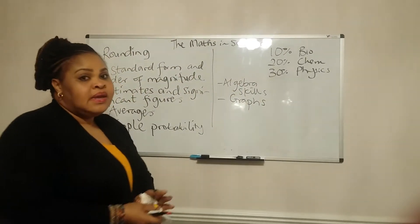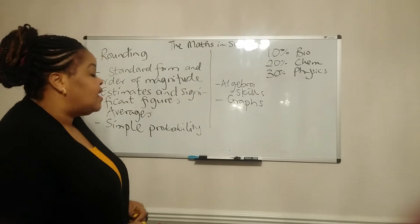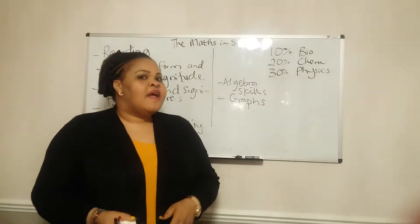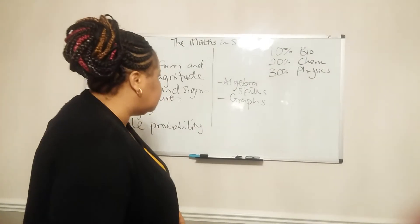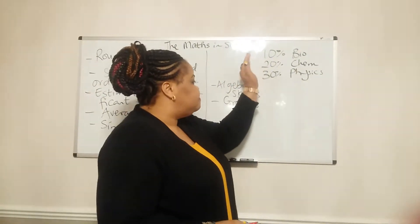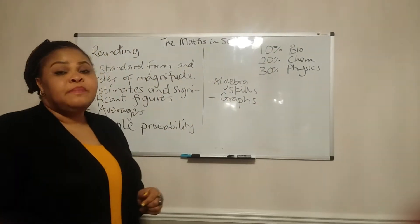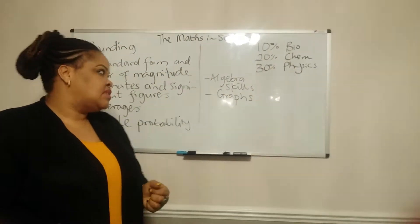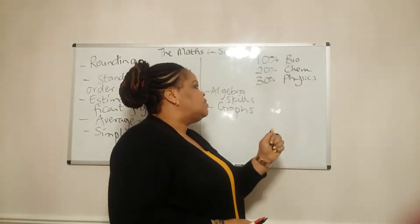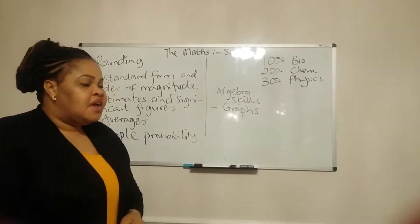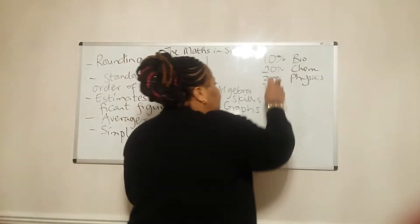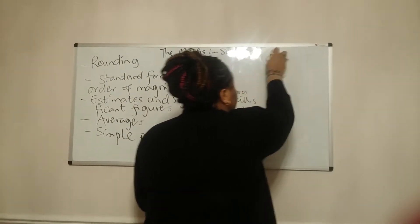So if you're taking the GCSE science exams this 2018, the new GCSEs as the 9 to 1 grading system, this is what you would find on the papers. If you're doing biology, 10% of the questions will be maths questions. The chemistry is 20% and the physics is 30%. But I'm going to now show you the actual topics.